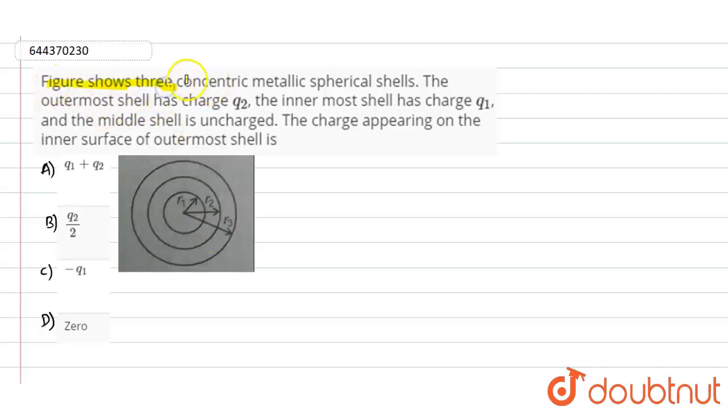So in this question, it is given that the figure shows three concentric metallic spherical shells. The outermost shell has charge q2, the innermost shell has charge q1, and the middle shell is uncharged.